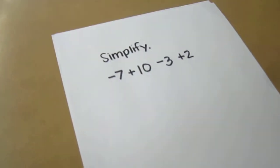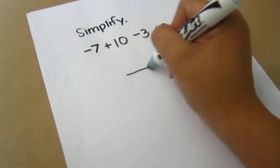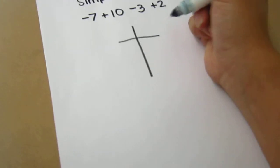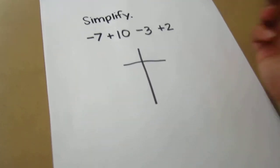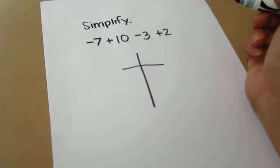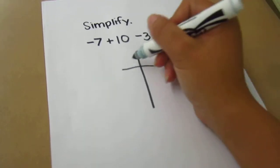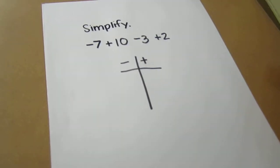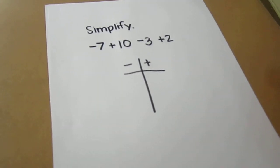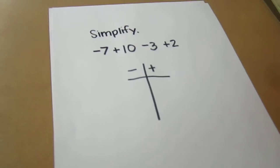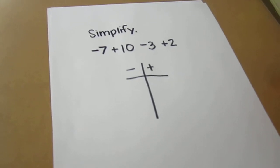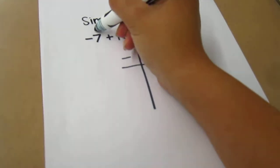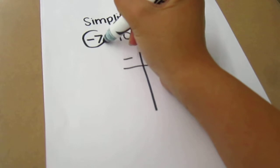I do this method using a t-chart. A t-chart is an organizational tool — it also stands for a term chart. On the left side are going to be the negatives, and the right side is where I'm going to have the positives. I'm going to identify each term.